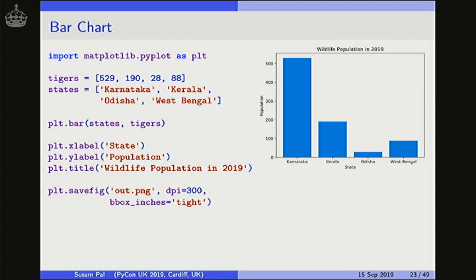So now let us move on to a new type of plot. This is a bar chart. In this bar chart, I am trying to show the number of tigers in four Indian states. It is really simple to draw bar charts using matplotlib. So we have this bar function call here. We specify these categorical values as the x axis coordinates and the height of each bar as the y axis coordinates. And once we make this function call, we get an output like this.